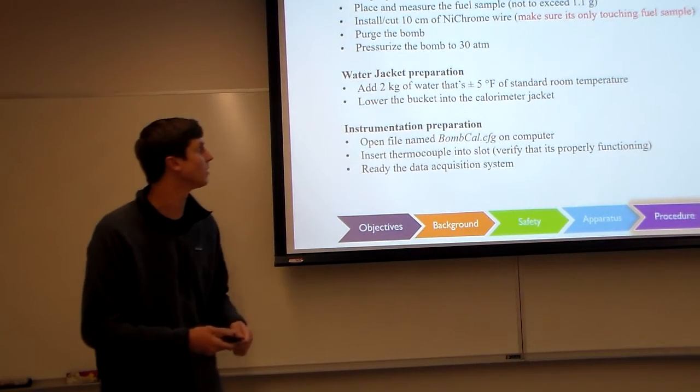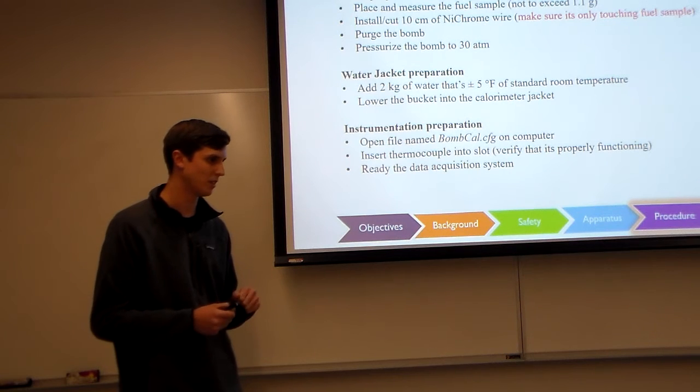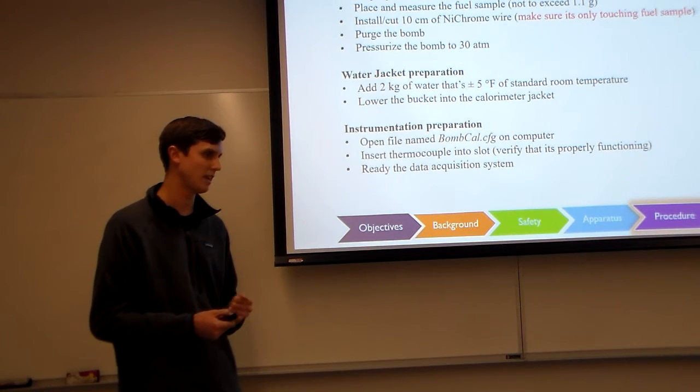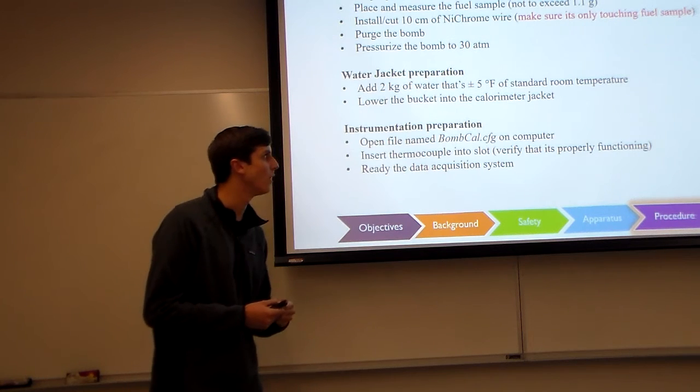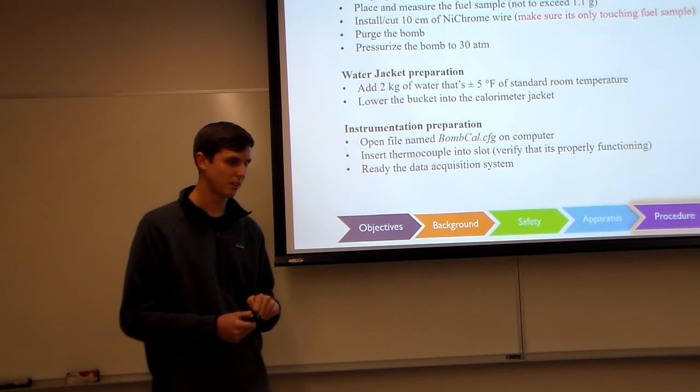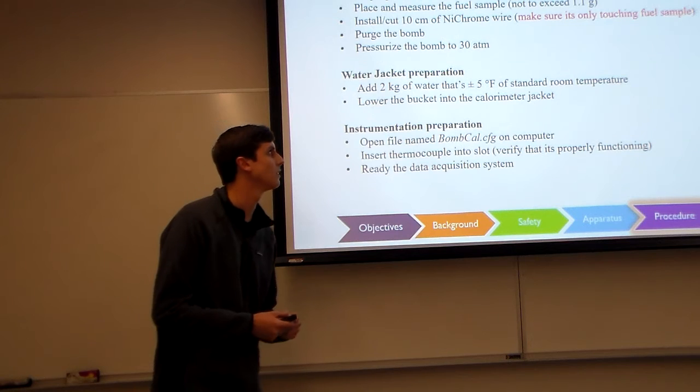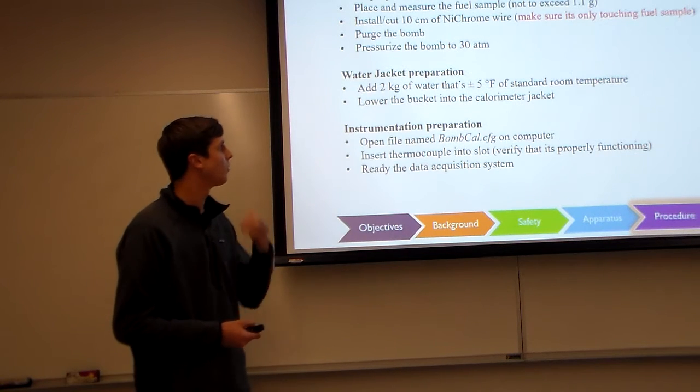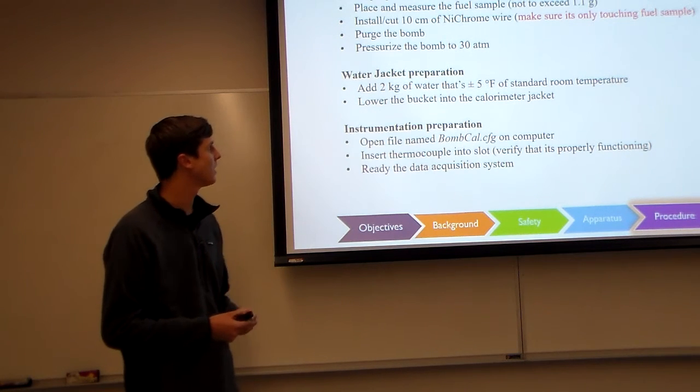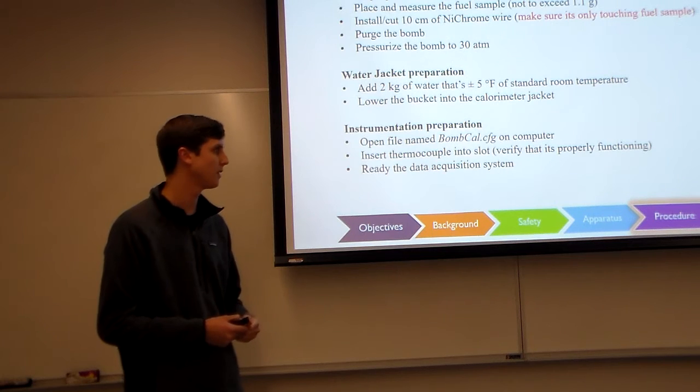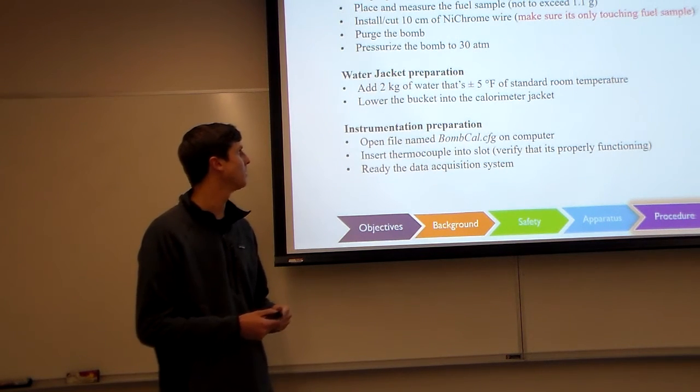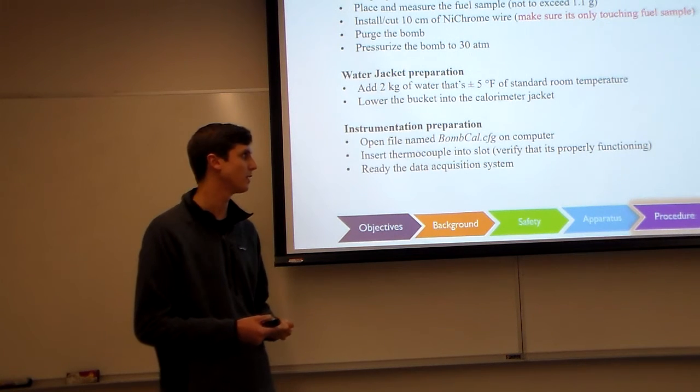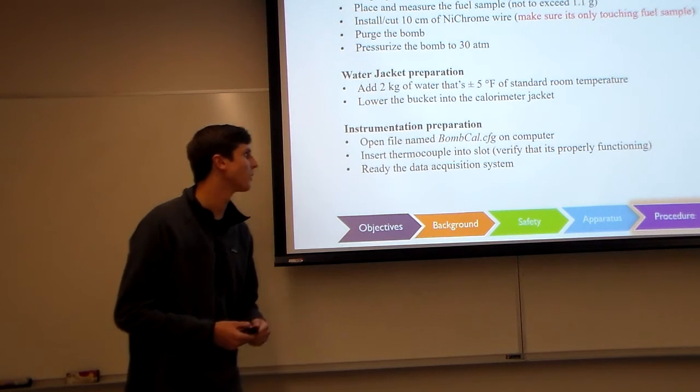So just a little bit of procedure we're going to be going through here. We're going to measure roughly one gram of benzoic acid, then we're going to cut 10 centimeters of the nichrome wire. Make sure it's only touching the fuel sample, you don't want to touch anything else to get an accurate reading. We're going to purge the bomb and pressurize the bomb to roughly 30 atmospheres. For the water jacket, we're going to add roughly 2 kilograms of water at around room temperature, plus or minus 5 degrees.